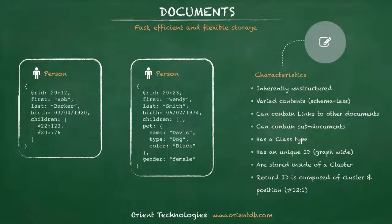A document store is commonly associated with very flexible, unstructured data. This is possible with OrientDB as well. One document can have a completely different set of properties without reservation. Another feature of a document store is to embed one document inside of another. In OrientDB, each document also belongs to a class, which we'll cover shortly.